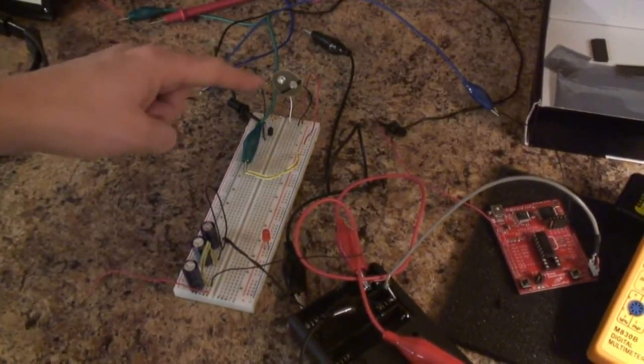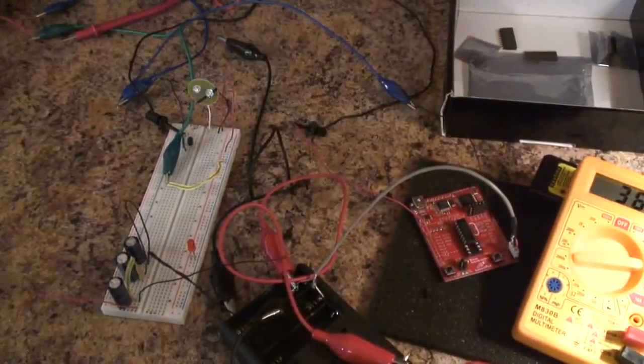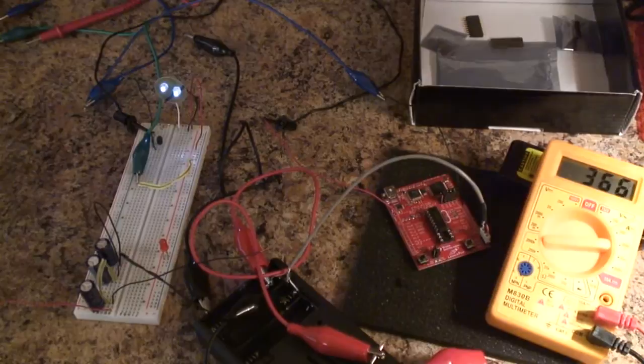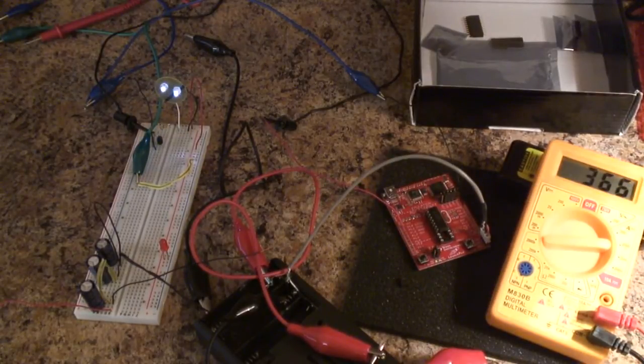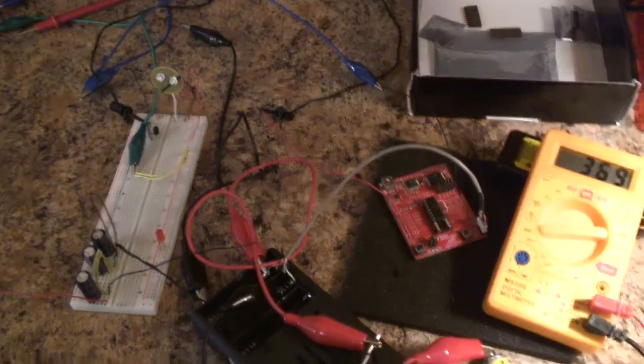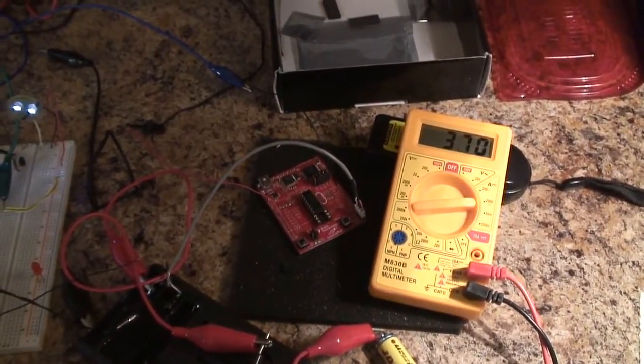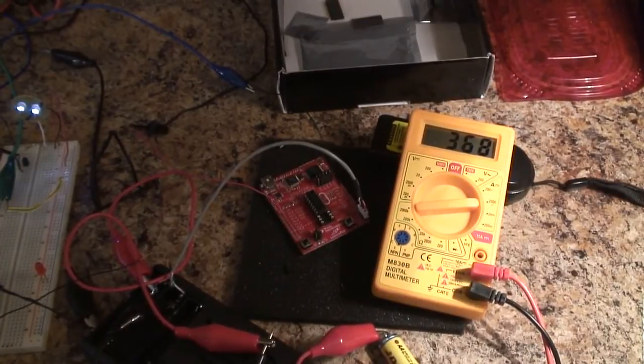But this blinking pattern is being controlled by the MSP430. So even though there are no LEDs on the circuit board, I still know that it's on. It's actually being powered. So we are using just about 365 microamps.